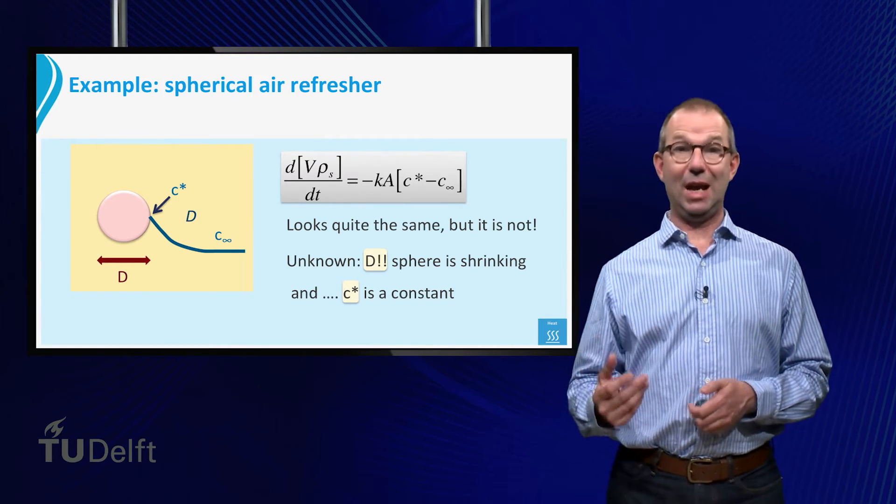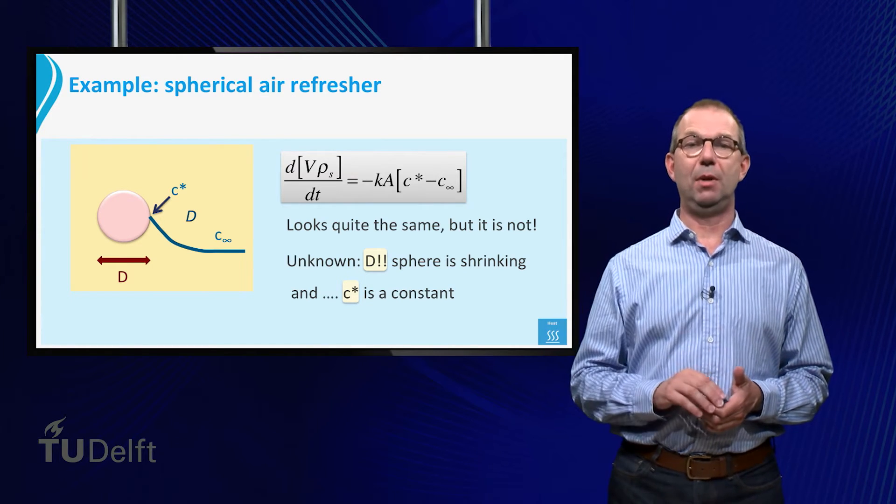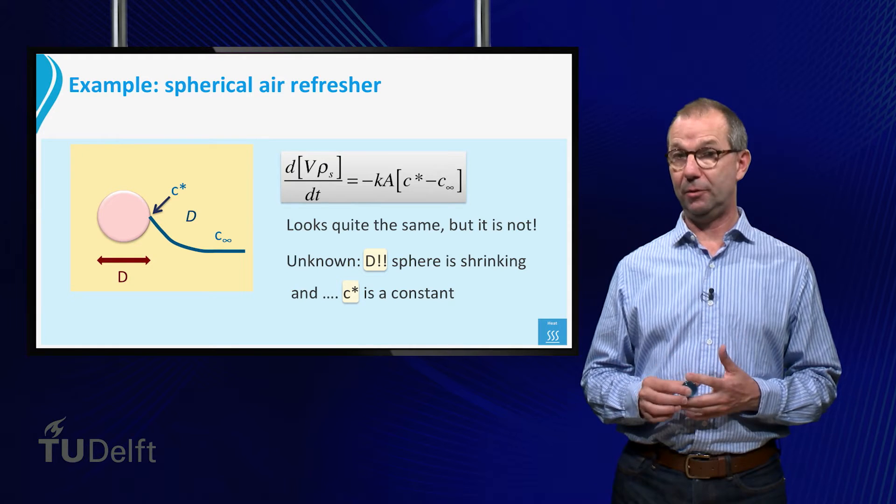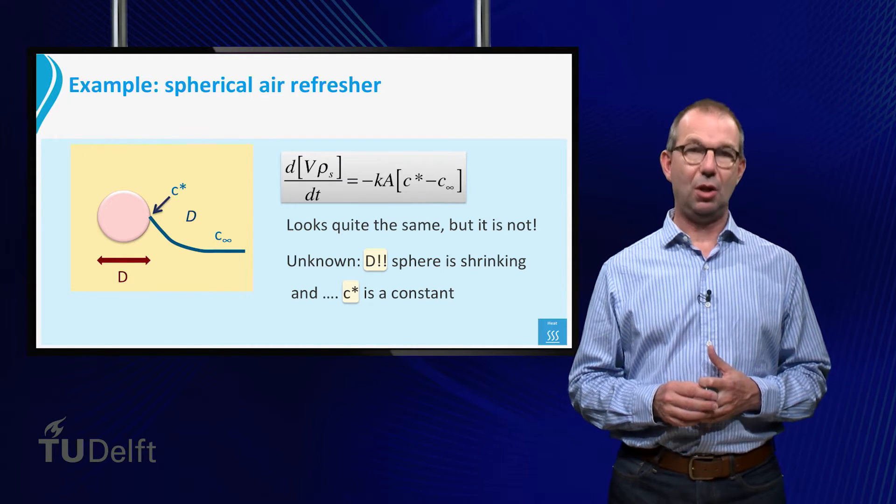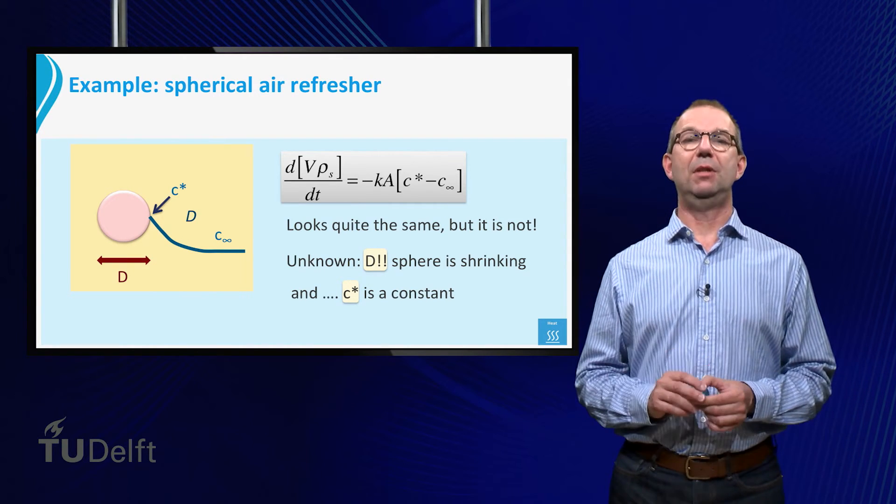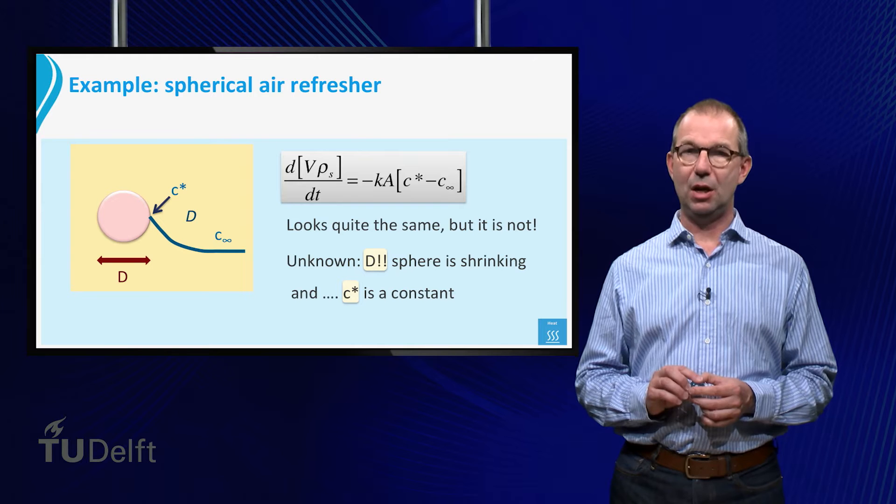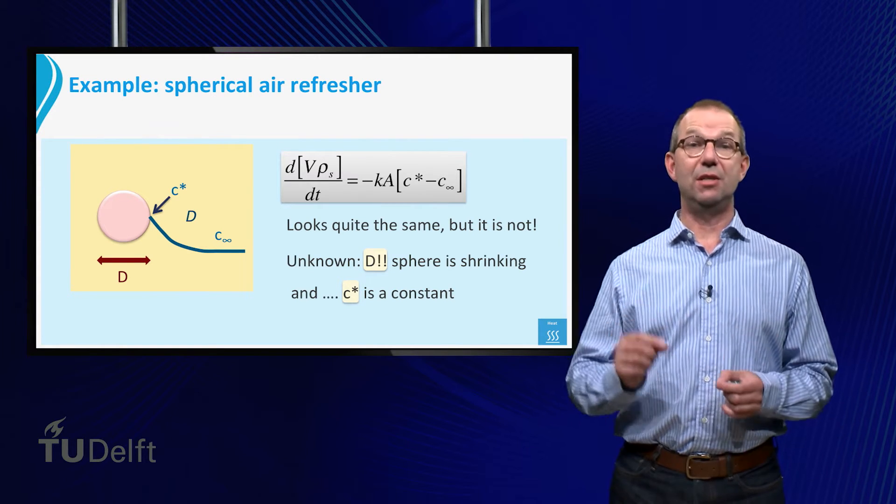Moreover the vapor concentration C star is a constant. It may look like it is playing the role of the sphere temperature from the cooling sphere, but it does not. So, we see that although the analysis and the setting up of the balance equation is quite the same in the cooling and evaporating case, the actual equations are quite different.